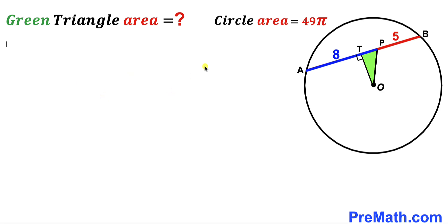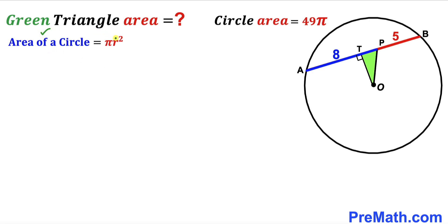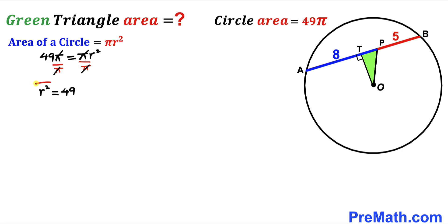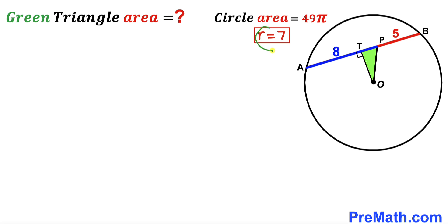Our very first step: we have been given the circle area as 49π and we are going to calculate the radius. Recalling the area formula, area = πr², we fill in: 49π = πr². Dividing both sides by π and taking the square root, the radius turns out to be 7 units.